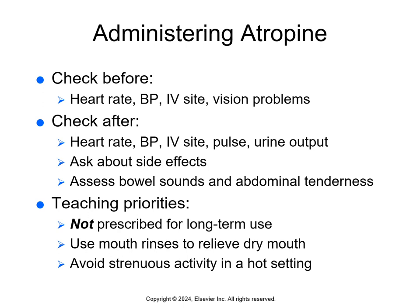Before giving atropine, I need to know the heart rate and blood pressure, ensure they have a working IV site, and ask about vision problems like glaucoma, because atropine can worsen that. After giving it, I want to monitor heart rate, blood pressure, IV site, pulse, and urine output, since urinary retention can be a side effect. Atropine can also cause constipation, so I need to assess their bowel sounds and abdominal tenderness and ask about any other side effects.